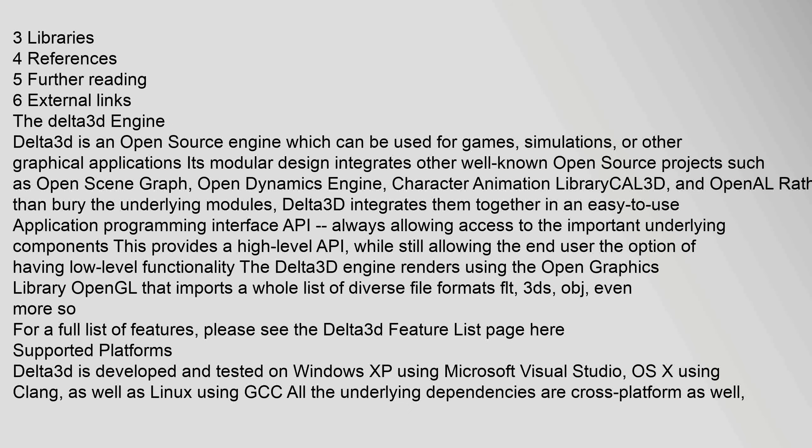The Delta 3D engine is an open-source engine which can be used for games, simulations, or other graphical applications. Its modular design integrates other well-known open-source projects such as OpenSceneGraph, OpenDynamicsEngine, CharacterAnimationLibrary Cal3D, and OpenAL. Rather than bury the underlying modules, Delta 3D integrates them together in an easy-to-use application programming interface (API).